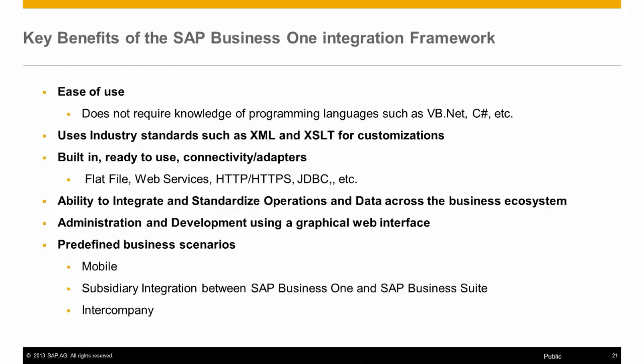The key benefits of the SAP Business One Integration Framework are: no requirement for knowledge of programming languages such as VB.NET, C#, or Java; use of industry standards such as XML and XSLT for customizations; built-in ready-to-use connectivity types such as flat file, web services, and HTTP; the ability to integrate and standardize operations and data across the business ecosystem; administration and development using a graphical web interface; and predefined out-of-the-box business scenarios such as mobile, subsidiary integration between SAP Business One and SAP Business Suite, and intercompany transaction processing.